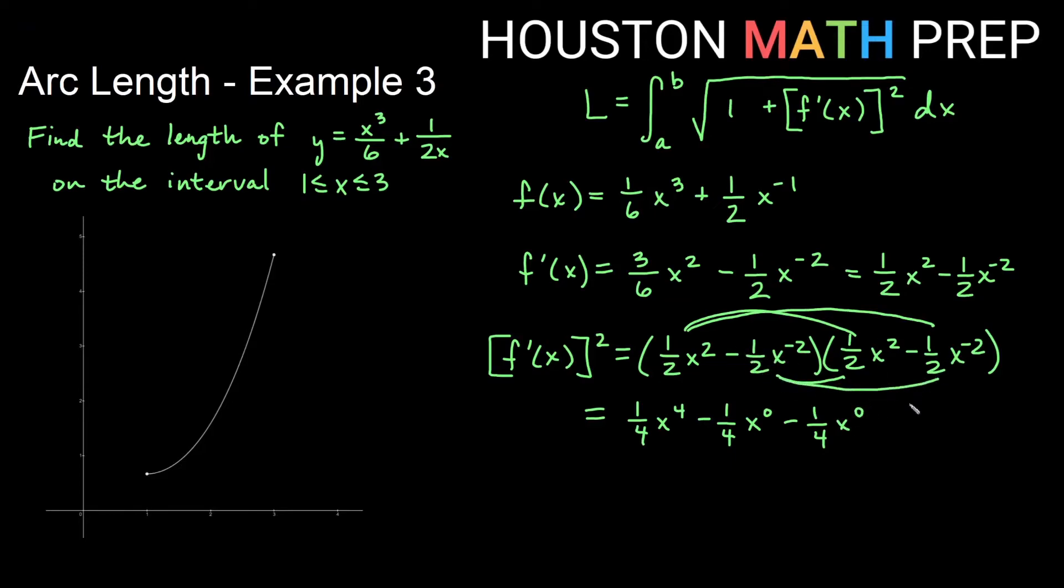And then for the last terms, I have negative times negative gives me a positive here, one fourth. And then x to the negative two, x to the negative two, that gives me x to the negative four. So the next thing we write down, I'm going to make a note of this. Now this is just a one here. Each of these x to the zeros is just a one. So this is really minus a fourth minus a fourth.